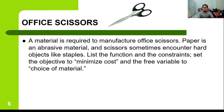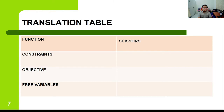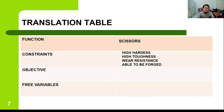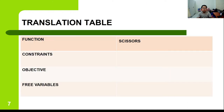One example is that of scissors. The information has been given clearly: you want the material required for office scissors. It has been stated that paper is an abrasive material, and scissors sometimes encounter hard objects like staples or paper clips. The function is to list the function and constraints, set the objective to minimize cost, and the free variable as the choice of material. So from this, we generate the translation table — the function being the scissors.